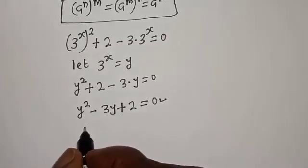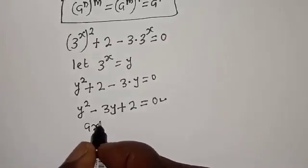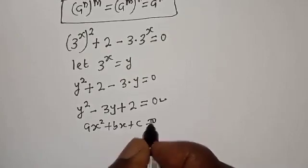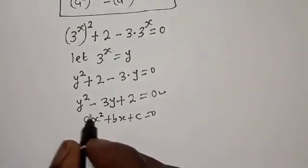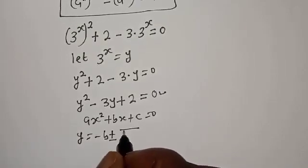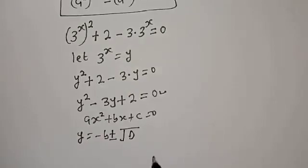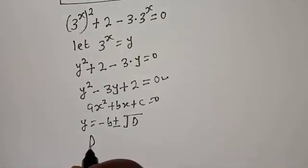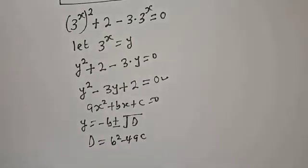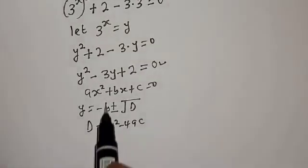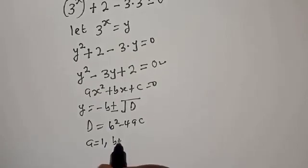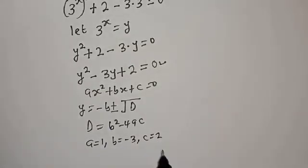From the quadratic general formula, for ay squared plus by plus c equals 0, y equals negative b plus or minus square root of the discriminant, over 2a, where discriminant d equals b squared minus 4ac. From our equation, a equals 1, b equals negative 3, c equals 2.